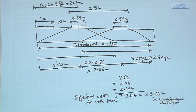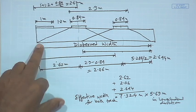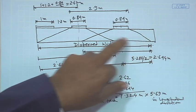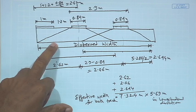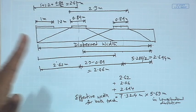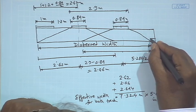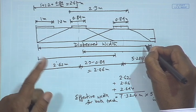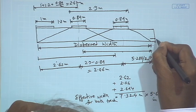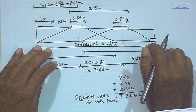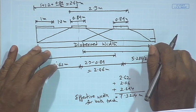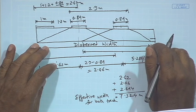One question arises: why not disperse up to the effective depth rather than the overall depth? The answer is that at this stage of the first calculation, we do not yet know the bar diameter or the effective depth — those are found in a second iteration. Using the overall depth is the simplest approach at this stage.